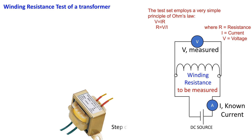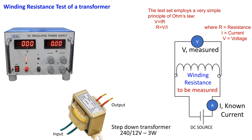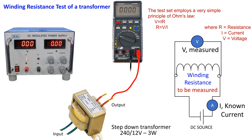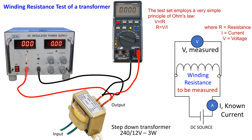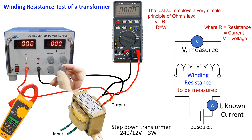A simple demonstration is given by animation where we are going to measure the secondary resistance of a 240 by 12 volt, 3 watt small step-down transformer. We see the arrangement and the result. We send 1.00 ampere current and the voltage drop we get is 7.920 volts.